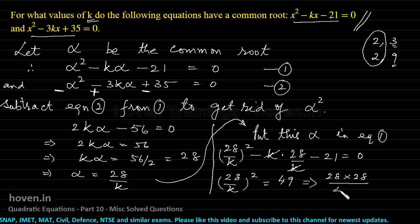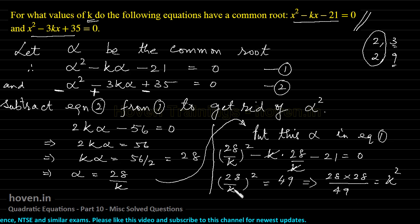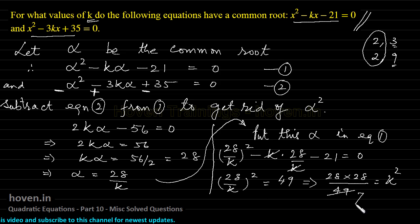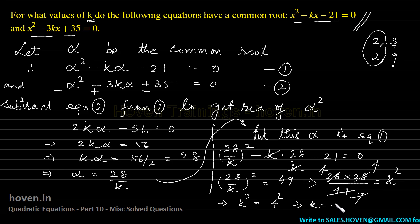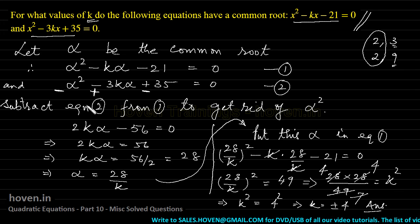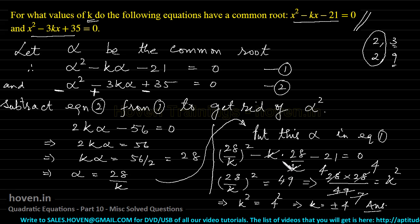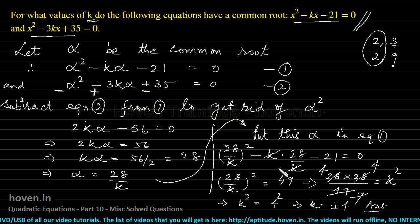Rearranging: 28² / k² = 49, so k² = 28²/49. Cancelling: 28 = 4×7, so 28²/49 = (4×7)²/7² = 16. Therefore k² = 16 = 4², giving k = ±4. This technique has been in use since the 18th century — older mathematics books contain the same method, handed down through generations. It is a predictable question your examiner might use.